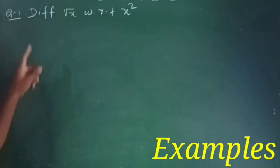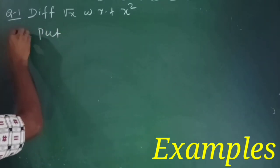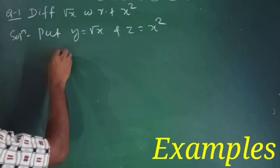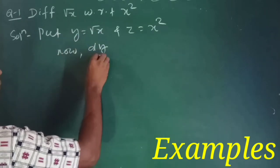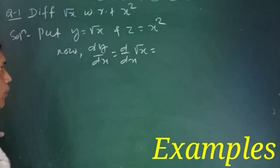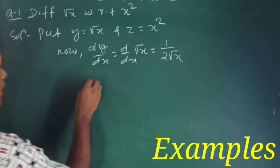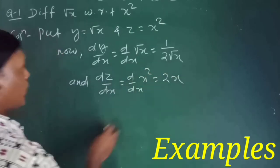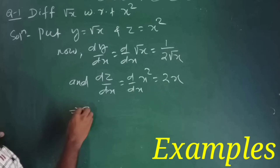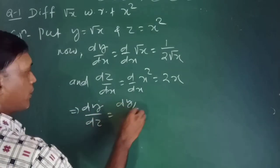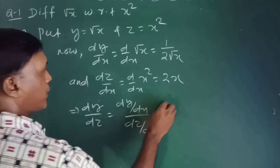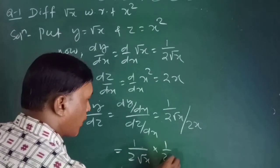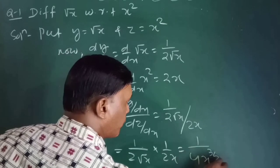Now the first example: differentiate √x with respect to x². Put y = √x and z = x². Since y is a function of x, find dy/dx = d/dx(√x) = 1/(2√x). And dz/dx = d/dx(x²) = 2x. Therefore, dy/dz = (dy/dx) ÷ (dz/dx) = (1/(2√x)) ÷ (2x) = 1/(2√x) × 1/(2x) = 1/(4x^(3/2)). This is the answer.